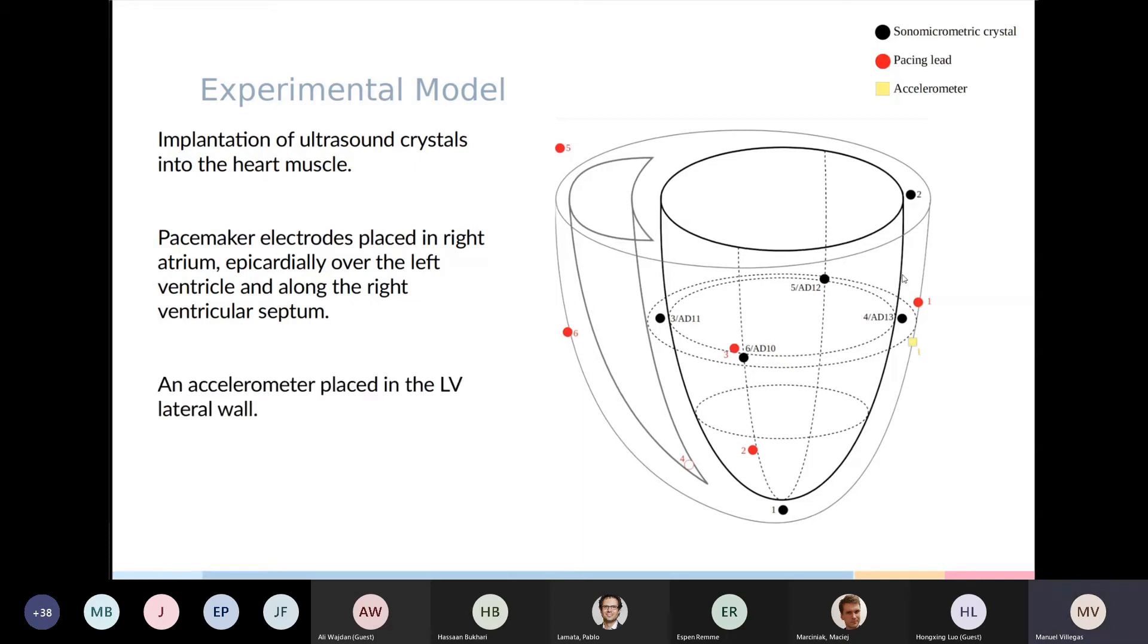Lastly, we attach an accelerometer on the LV lateral wall that is used for several of our studies, and it's the motion sensor that we're studying right now.